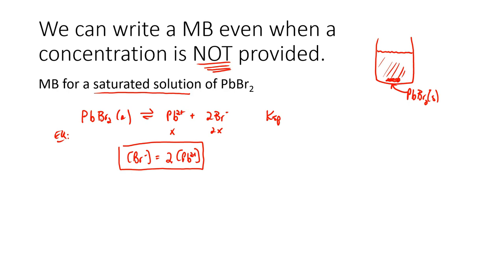Now, I want to pause for a moment, because I've seen students get confused over the fact that in the chemical equation, the 2 is in front of the bromide, but in our mass balance, the 2 is in front of the lead. Don't panic about that.